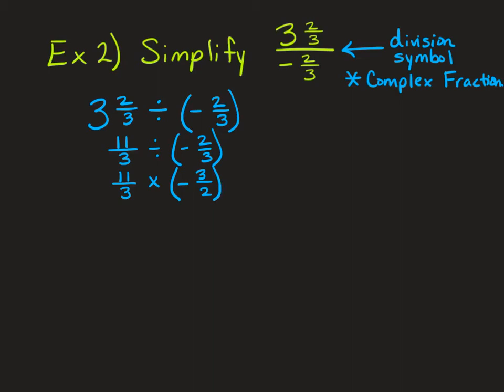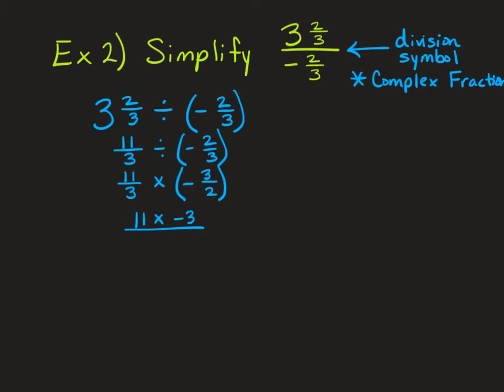And then we just multiply our numerators, 11 times negative 3, and then multiply our denominators, 3 times 2. Be careful of one thing. When you have a negative sign in front of a fraction, that negative either goes with the numerator or the denominator, but it doesn't go with both. So now I can go ahead and multiply. 11 times negative 3 is negative 33. 3 times 2 is 6. And I would notice that these are both multiples of 3. So I could divide them both by 3.